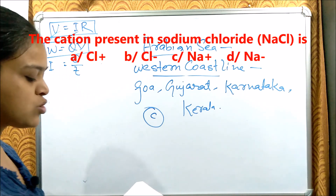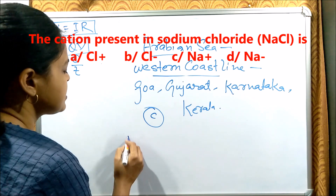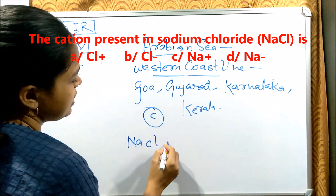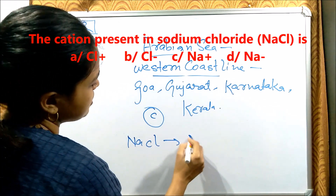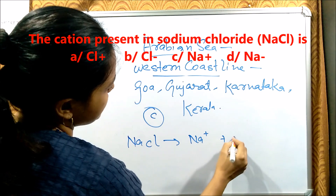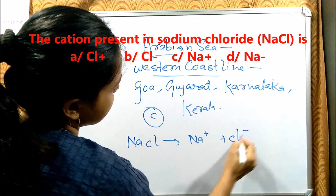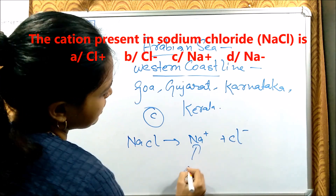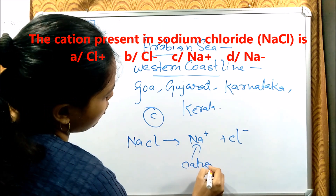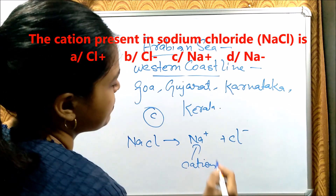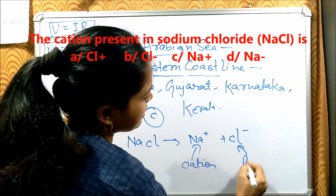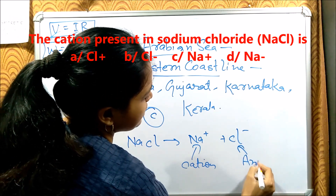Next: What cation is present in sodium chloride (NaCl)? Split NaCl into sodium (Na⁺) and chloride (Cl⁻). A cation has a positive charge, so sodium (Na⁺) is the cation. Chloride, having a negative charge, is the anion.